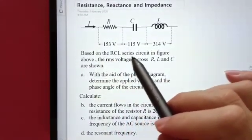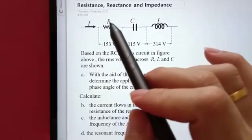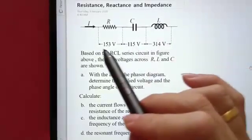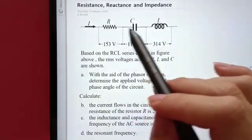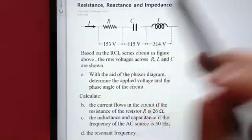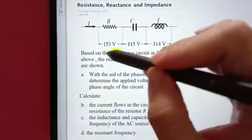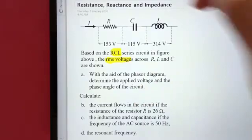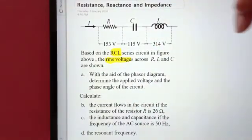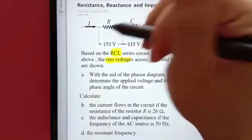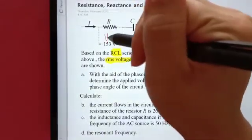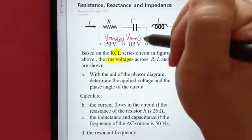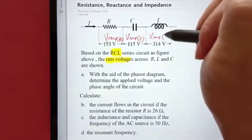Based on the RCL series circuit. This circuit has three components: resistor, capacitor, and inductor. The voltage is given across all of them, so this is an RCL circuit. The root-mean-square voltages are shown — so all these are RMS voltages. This is the RMS resistor voltage, this is the RMS capacitor voltage, and this is the RMS inductor voltage.